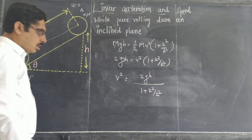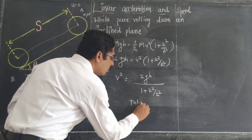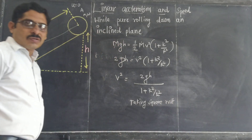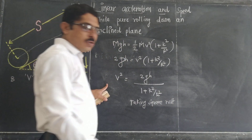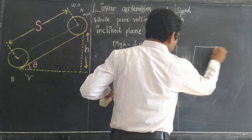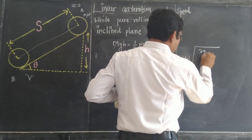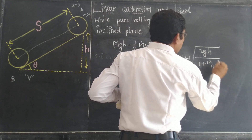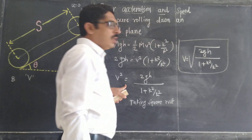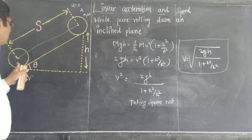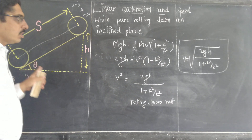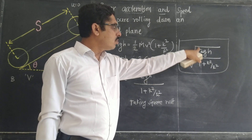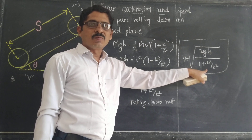The mass m cancels. We get v squared equals 2gS divided by one plus k squared upon r squared. Taking the square root, therefore v equals the square root of 2gS upon one plus k squared upon r squared. This is the value of the linear velocity of the rolling body.